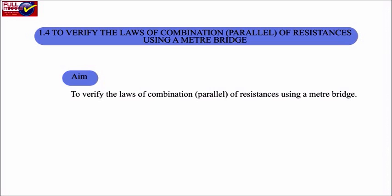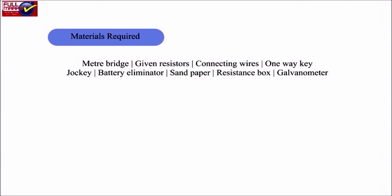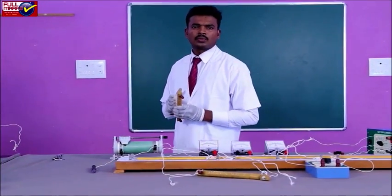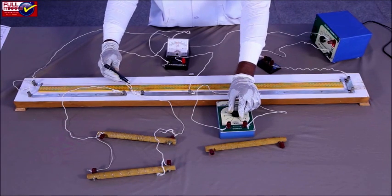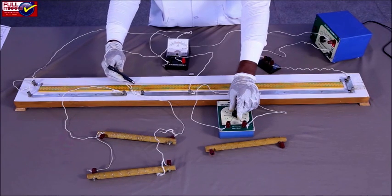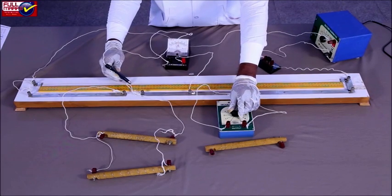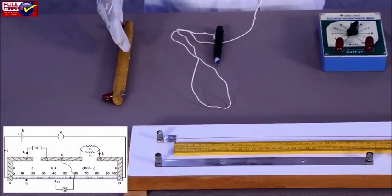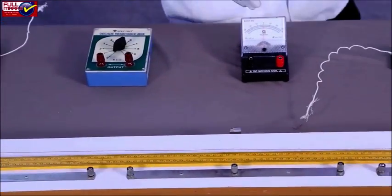Experiment 1.4: To verify the laws of combination — parallel — of resistance using a meter bridge. Materials required: meter bridge, given resistors, connecting wires, one-way key, jockey, battery eliminator, sandpaper, resistance box, and galvanometer. Resistances are said to be connected in parallel when one end of each resistance is connected at one common point and their other ends are connected to another common point. The equivalent resistance of a parallel combination is less than the individual resistance. Set up the apparatus as given in the circuit diagram. Determine the value of individual resistance by following the same steps as in Experiment 1.2.